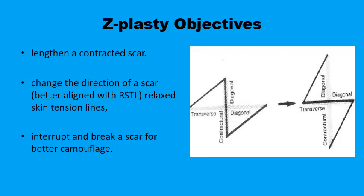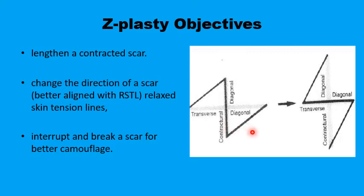It can increase the length of a scar — particularly a contracted scar, which can be disfiguring and sometimes dysfunctioning. This can be lengthened by more than 50% or 75% by varying the angle of the Z-plasty. It can also change the direction of a scar so that it conforms better with relaxed skin tension lines, and it can interrupt and break a long disfiguring scar so that it can be camouflaged better.